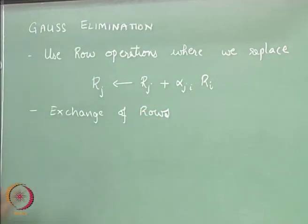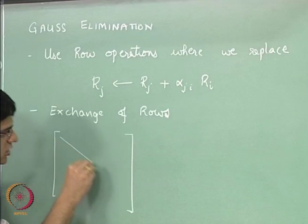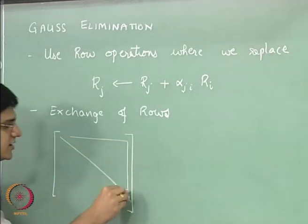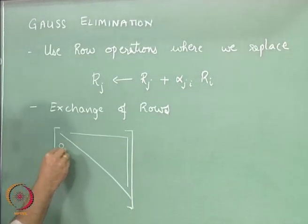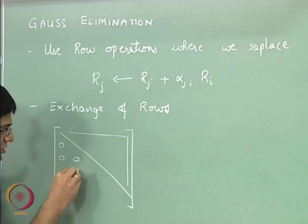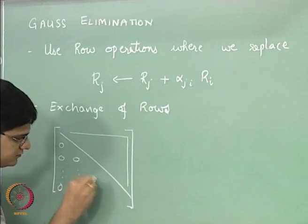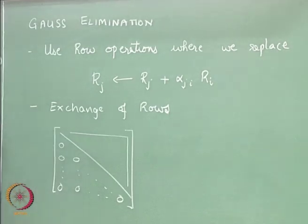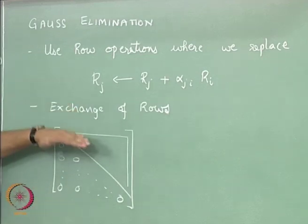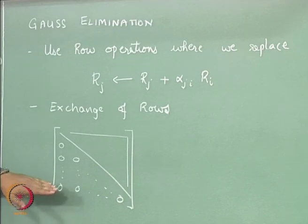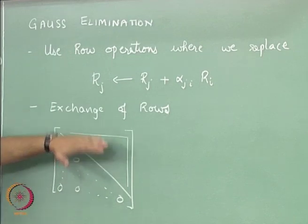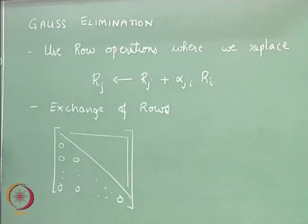So these are the two row operations that we will use such that we get an upper triangular matrix for the matrix A. So what do we mean by upper triangular matrix for matrix A is that all the values on the diagonal and above diagonal may or may not be 0s, but all the values below the diagonal have to be 0. We will try to get 0s in all the equations. Below equation number 1, we will get 0s for the variable x1. Below equation number 2 for all equations, we will try to get 0 for the variable x2, so on and so forth.